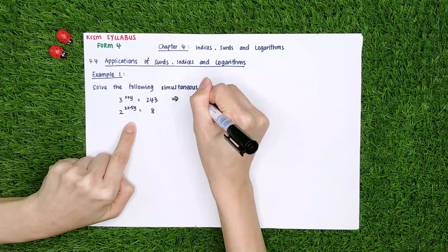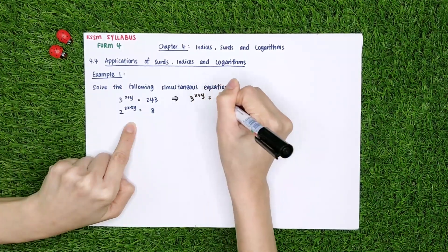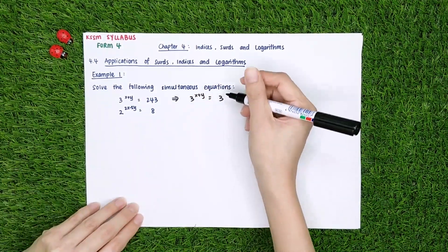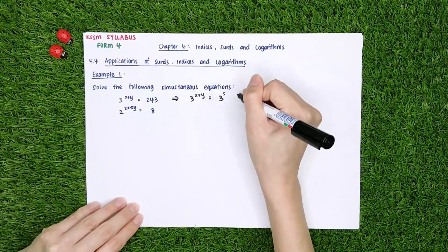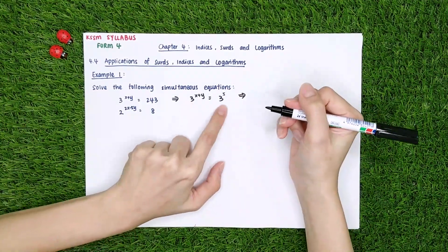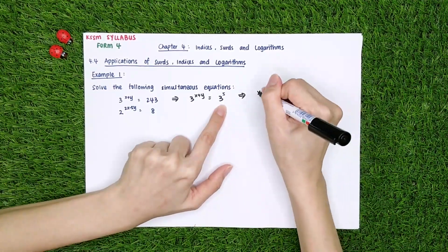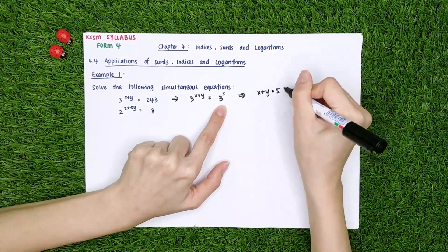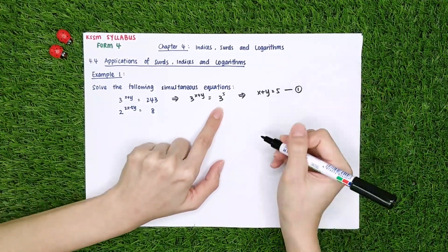we can know that 3 power of x plus y is equal to 243, which is equal to 3 power of 5. So since the base is the same, I can write that x plus y is equal to 5. This is the first linear equation.